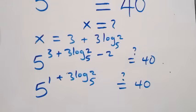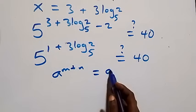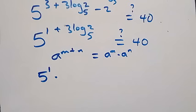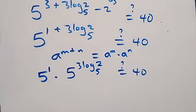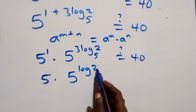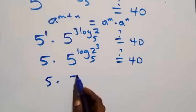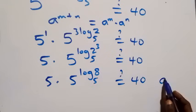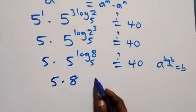This should equal 40. Using the law of indices — a raised to power m plus n equals a raised to power m times a raised to power n — this becomes 5 raised to power 1 times 5 raised to power 3 log₅ 2, which equals 40. Reversing the power rule gives 5 times 5 raised to power log₅ of 2 cubed, which is 5 times 5 raised to power log₅ 8. Using the identity a raised to power log_a b equals b, the 5 raised to power log₅ 8 becomes 8.